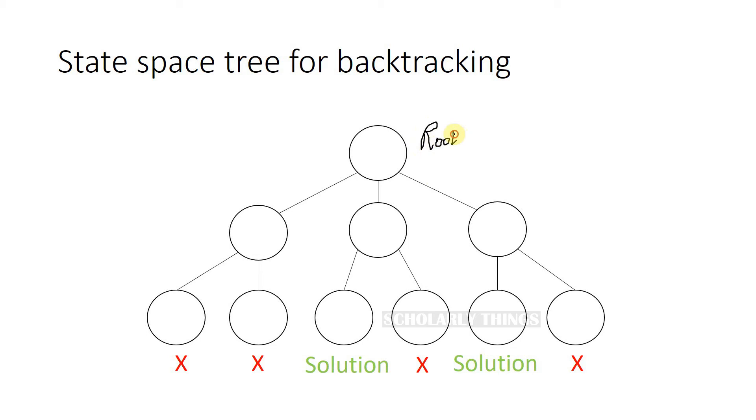This is the root node, this is level one, and this is level two. At the root node, the search for solution is not yet begun. From the root node, you go to level one. Say you choose this node and you check for constraints.